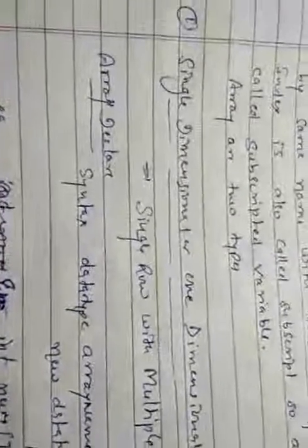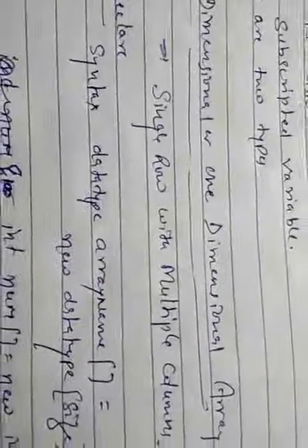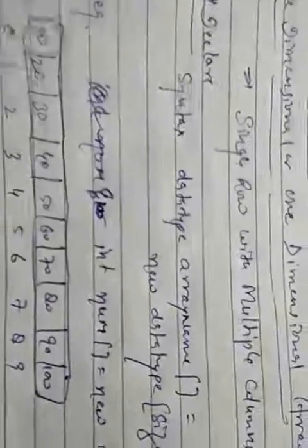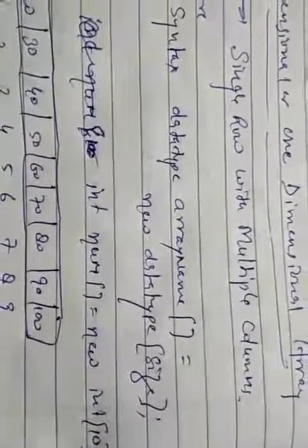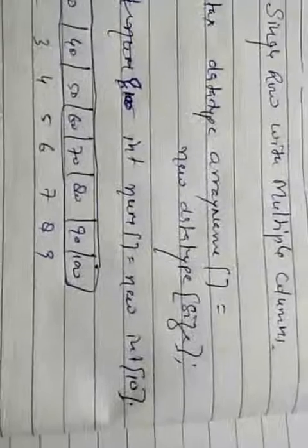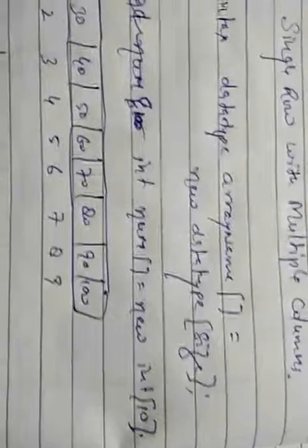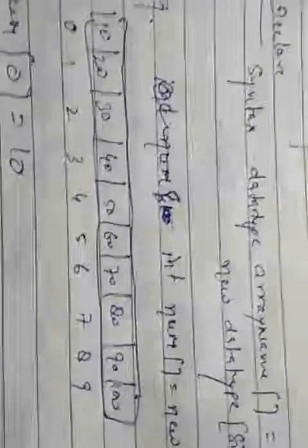There are two types of array. The first is a single dimensional array, also known as the one-dimensional array, which is a single row with multiple columns. Now here, you can declare an array with the syntax: data_type array_name = new data_type[size]. For example: int num[] = new int[10].